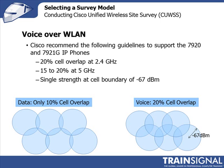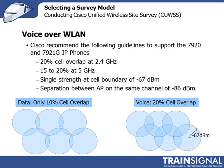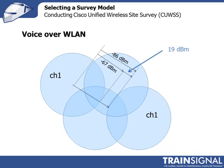That is, interference between two access points that are on the same channel. Cisco recommends that the distance from one access point to the edge of the cell of a second access point that is on the same channel should be less than -86 dBm.